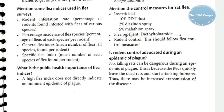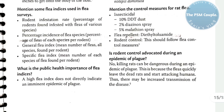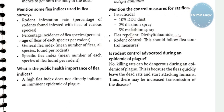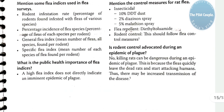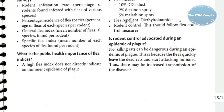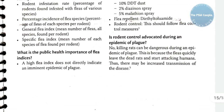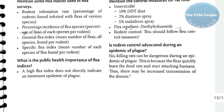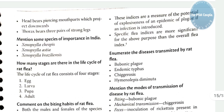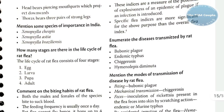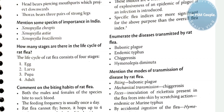Specific flea index means the number of each species of flea found per rodent. Regarding the public health importance of flea indices: a high flea index does not directly indicate an imminent epidemic of plague. These indices are a measure of the potential explosiveness of an epidemic of plague if an infection is introduced. Specific flea indices are more significant for this purpose than the overall general flea index.